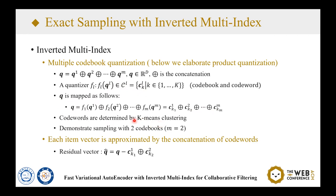We demonstrate sampling with two codebooks for simplicity, which is the default option of the inverted multi-index. Each item has a residue vector that equals Q minus the quantization of the two codewords from the first subspace and the second subspace. The inverted multi-index assigns each item to a unique codeword in each subspace. Inspired by this, it is possible to develop sublinear time sampling methods from the softmax distribution by splitting item sampling into several stages.